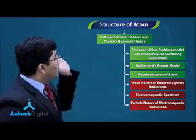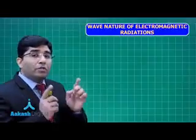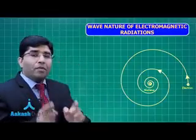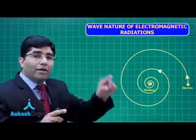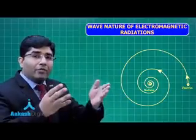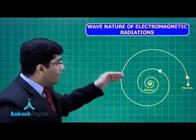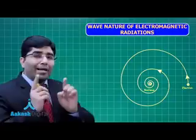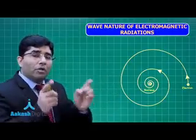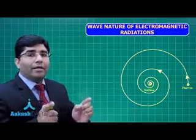Today we are going to discuss about the wave nature of electromagnetic radiations, which is very important to study about the failure of Rutherford's model. If an electron is moving around the nucleus and it is emitting electromagnetic radiation, which is a kind of energy, it will fall down into the nucleus — and this was not explained by Rutherford. In this lecture we will study about electromagnetic radiations.